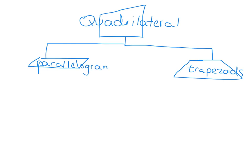A parallelogram is also a quadrilateral because it falls underneath it on the family tree, and a trapezoid is also a quadrilateral for the same reason. The left branch is for quadrilaterals that have two sets of parallel sides, and the right branch is for quadrilaterals that have one set of parallel sides.